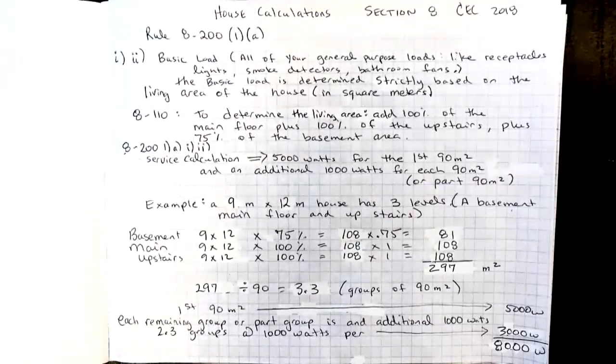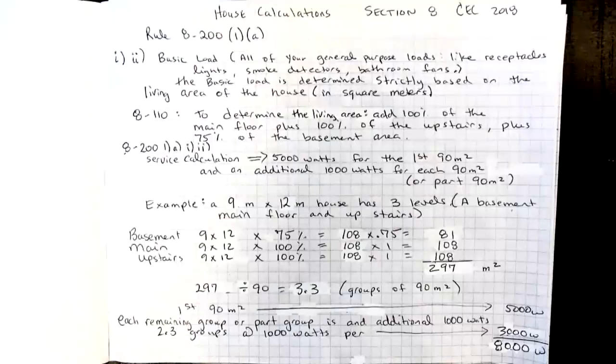8-110 is the method that we use to determine the actual living area. So we use 100% of the main floor area plus 100% of the upstairs if there is upstairs and 75% of the basement area.